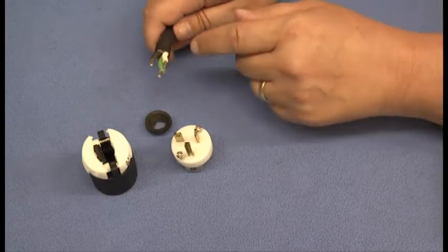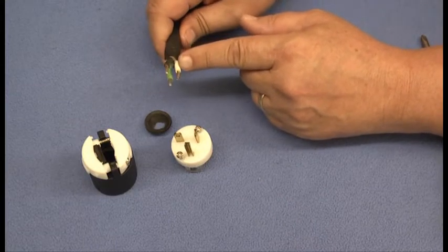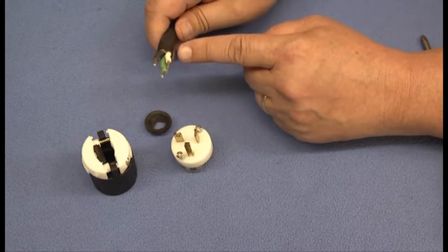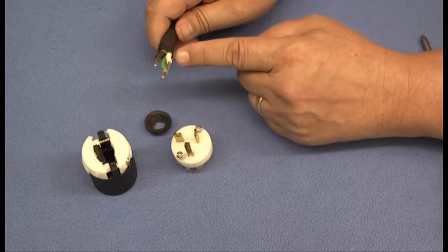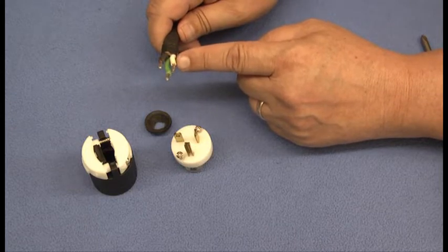We removed about an inch of insulation from the end of the cord, revealing three leads. Black and white are both hot, and green is neutral. There's no polarity here. Next, we removed about a half inch of insulation from the end of each lead and tinned them.